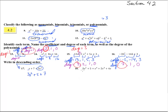Number 18, descending order. We've got to find the biggest degree here — that's x to the fourth. Then 2x cubed, then 3x squared, then plus 4x, then plus 5. And there we have it.